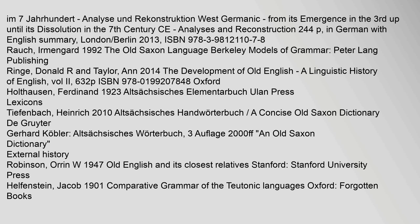A key bibliographic source is the analysis and reconstruction of West Germanic from its emergence in the 3rd up until its dissolution in the 7th century CE, 244 pages, in German with English summary, London/Berlin 2013, ISBN 978-3-9812110-7-8. Another source is Ermengarde Roch (1992), 'The Old Saxon Language,' Berkeley Models of Grammar, Peter Lang Publishing.